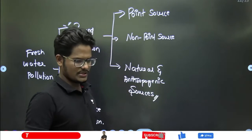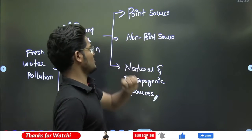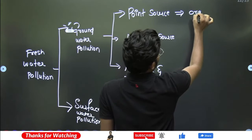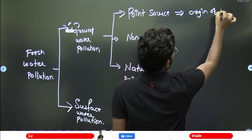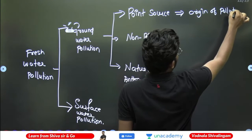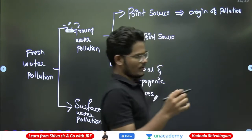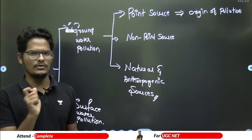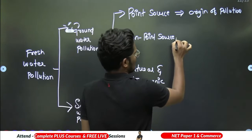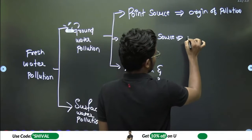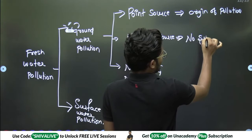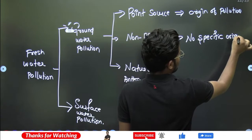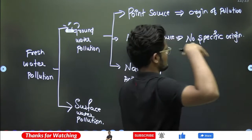Point source pollution means the origin of the pollution is known — we know from where it is coming, from where it is getting started. Like from houses or from drainages, we can identify where it is coming from. Nonpoint source means no specific source or no specific origin — it could be starting from somewhere we don't know.